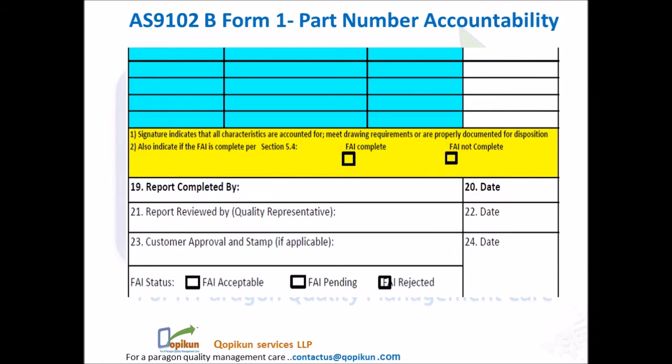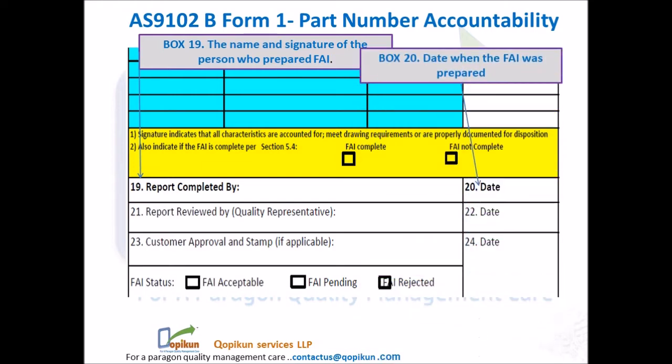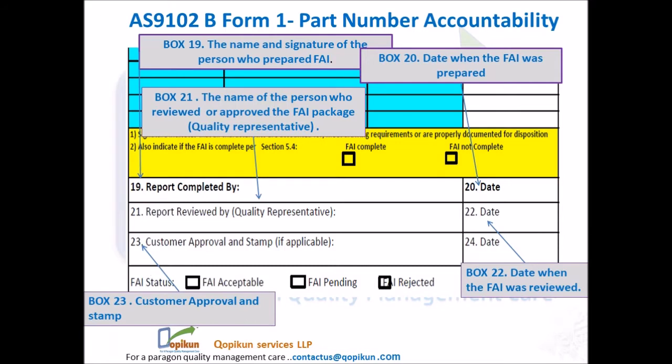AS9102B Form 1 part number accountability. Box 19 specifies the name and signature of the person who prepared the FAI. Box 20 specifies the date when the FAI was prepared. Box 21 specifies the name of the person who reviewed or approved the FAI package — quality representative. Box 22 specifies the date when the FAI was reviewed. Box 23 specifies customer approval and stamp. Box 24 specifies the date of customer approval.